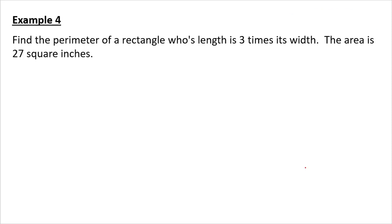Last problem. So, find the perimeter of a rectangle whose length is 3 times its width, and the area is 27 square inches. So, again, I think it's helpful if we draw a picture. So, its length is 3 times what the width is. We know the area. I need to find the perimeter. But I have an x in here. So, I know my area is 3 times x times x, which is x squared.